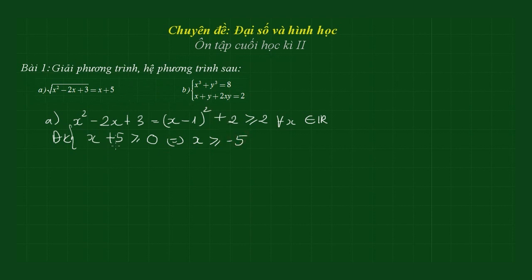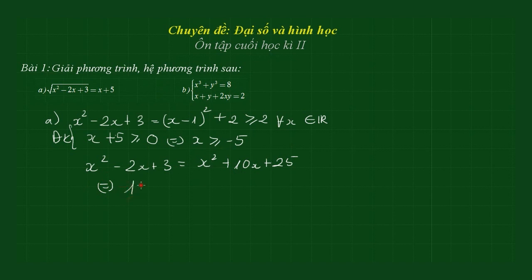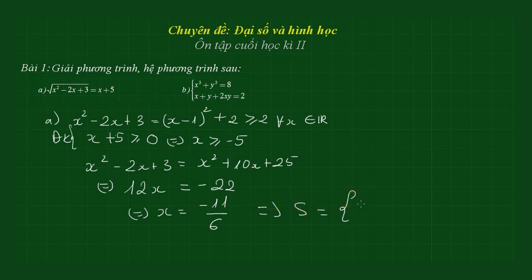Chúng ta bình phương hai vế: x² - 2x + 3 = (x+5)² = x² + 10x + 25. Phương trình bậc nhất tương đương: chuyển vế được -12x = 22, suy ra x = -11/6. Kiểm tra: -11/6 > -5, thỏa điều kiện. Vậy tập nghiệm S = {-11/6}.